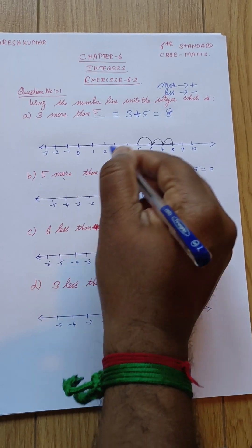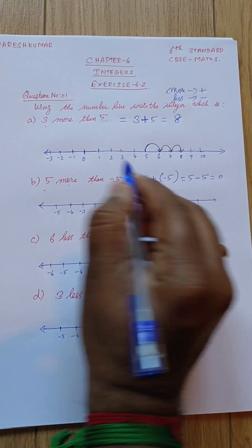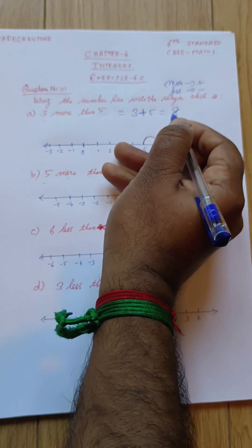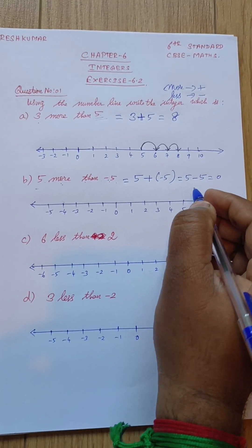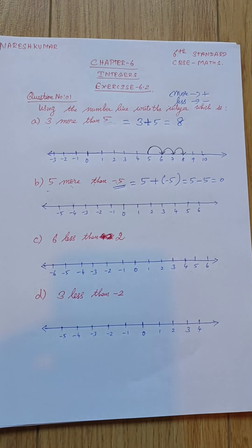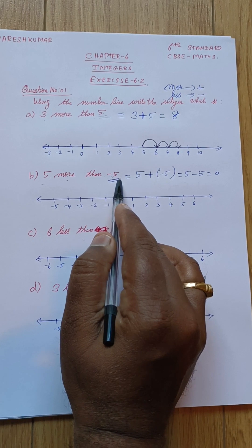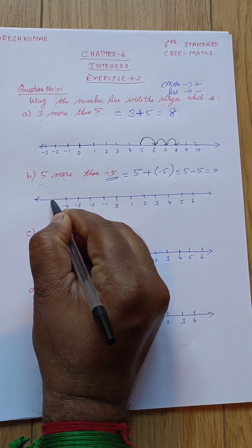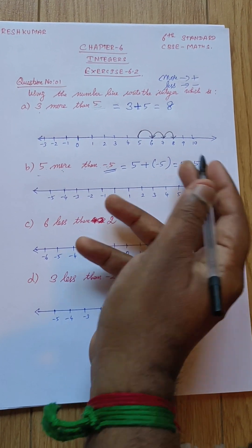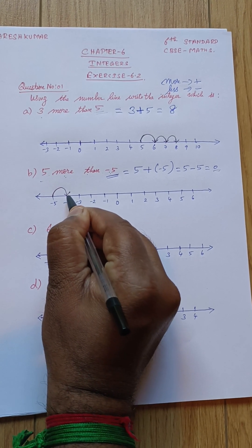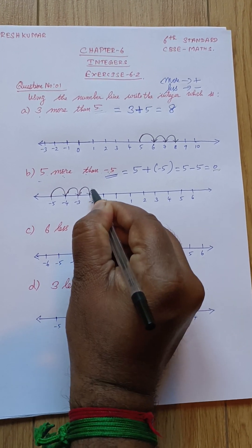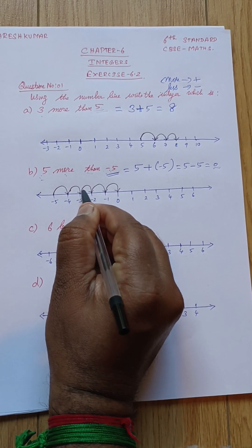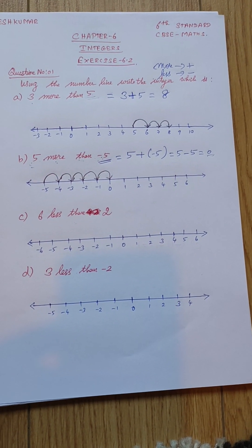For five more than minus five, we write minus five plus five. We start from minus five on the number line. I have marked minus five on this side and five on the other side. From minus five, we count: minus five to zero - one, two, three, four, five. So minus five plus five equals zero. That is the answer.